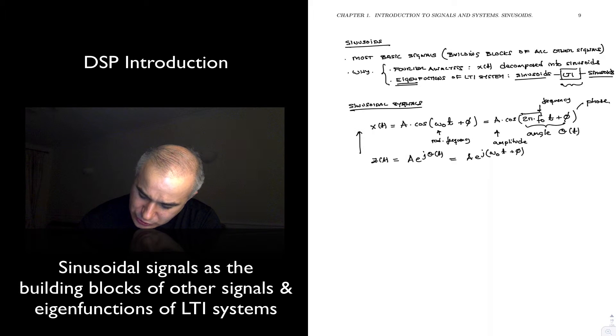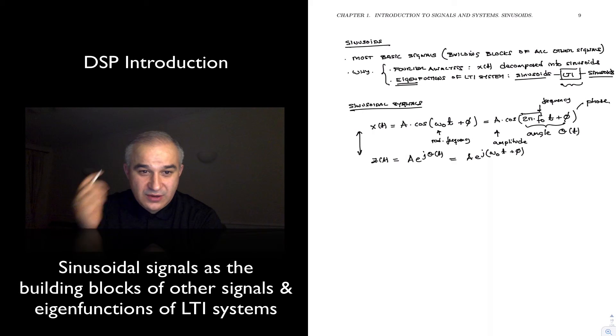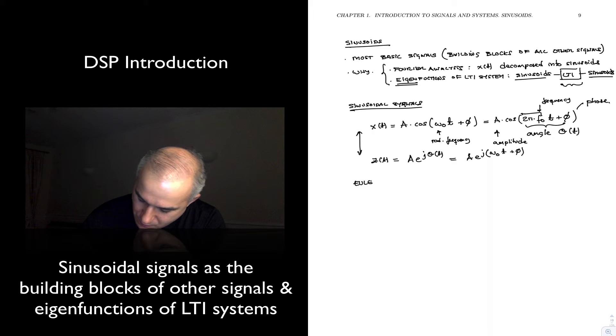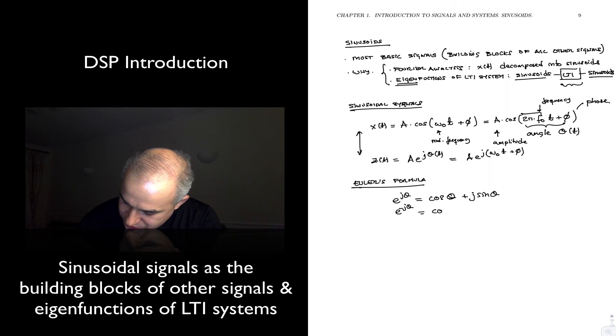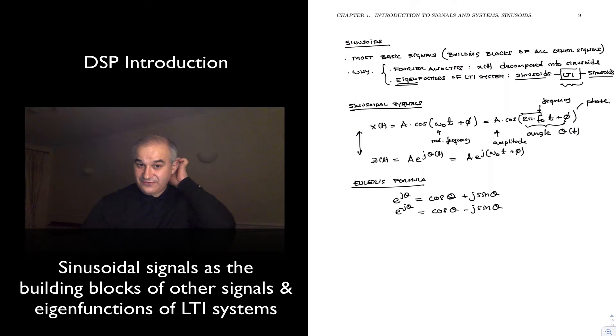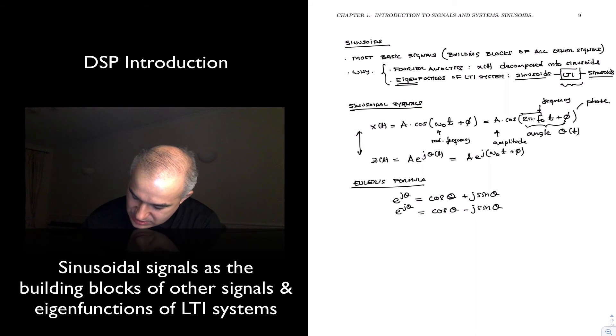Now, you have a relationship between those two through the Euler formula, right? e to the j theta is equal to cosine of theta plus j sine theta, or e to the minus j theta equals cosine of theta minus j sine theta, or in generalized form, you have that r e to the j theta is equal to r cosine of theta plus j r sine of theta.